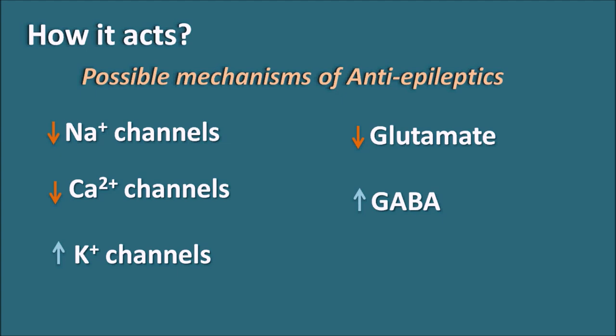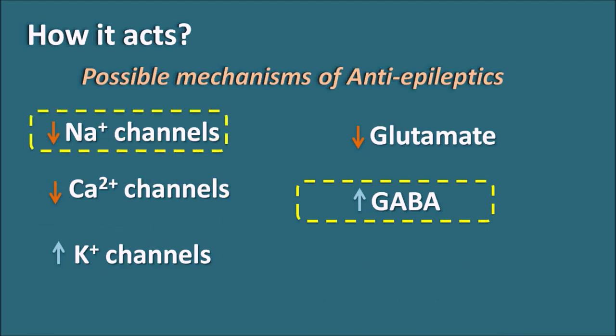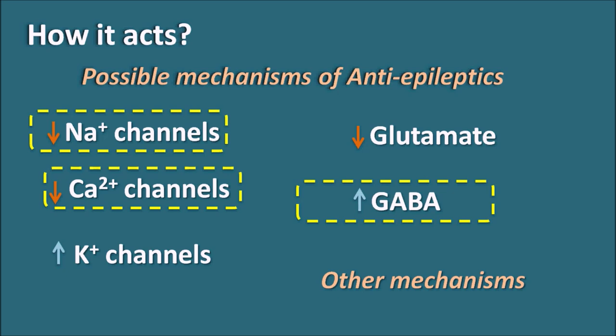The exact mechanism by which valproic acid acts as an antiepileptic is not entirely clear, but there is evidence for several mechanisms. One possible mechanism is to increase GABA, another is to decrease sodium channel activity as well as calcium channel activity. Among all these mechanisms, the increase in GABA action is considered the main mechanism of valproic acid.